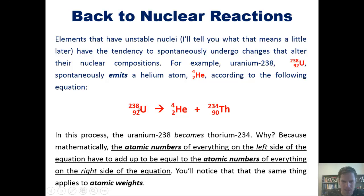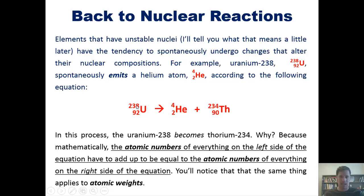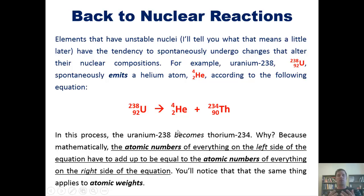On the right side of the equation, in the upper left quadrant, there's a 4 next to helium and a 234 next to thorium. 4 plus 234 adds up to 238, which is the atomic mass of uranium. Similarly, 2 is the atomic number for helium, and 90 is the atomic number for thorium. 90 plus 2 equals 92, which is the atomic number for uranium. So mathematically, that all makes sense.